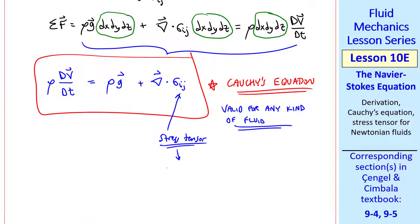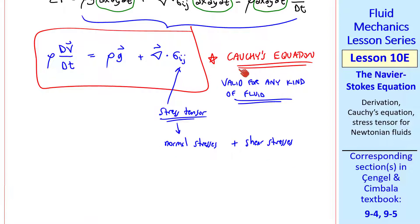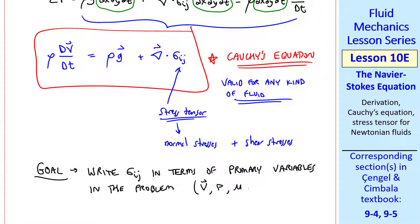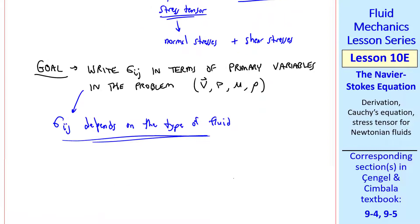What distinguishes one fluid from another is the stress tensor. The stress tensor itself is made up of normal stresses and shear stresses. Cauchy's equation by itself is not very useful until we can get an expression for sigma ij. So the goal is to write sigma ij in terms of primary variables in the problem, like velocity, pressure, viscosity, density. We already have density in the equation, but we need to get sigma ij in terms of these other variables in order to make Cauchy's equation useful. Sigma ij itself depends on the type of fluid, which leads me to a discussion of the different types of fluids.